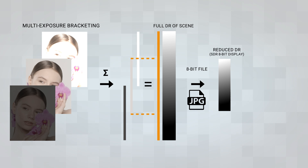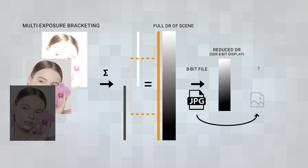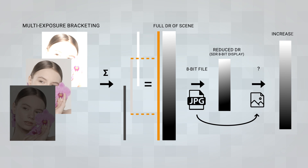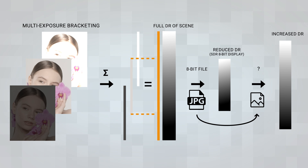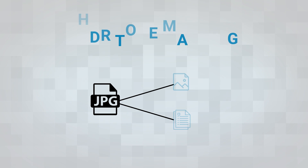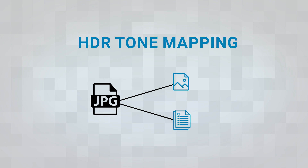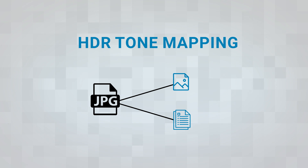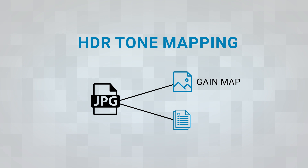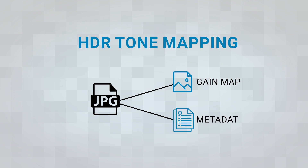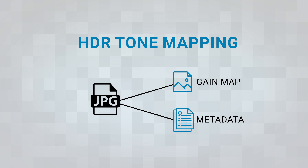However, smartphone manufacturers and image editors have developed a solution that cleverly incorporates both SDR and HDR renditions within a single image file, allowing for dynamic transitions between the two during display. This method is known as a special case of HDR tone mapping and has been implemented by manufacturers like Apple and Google. It uses what is called a gain map that is embedded within the image file, along with other important metadata, in order for the same file to be visible on either SDR or HDR displays.